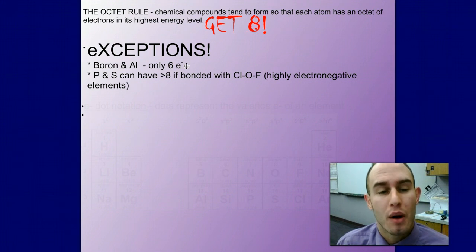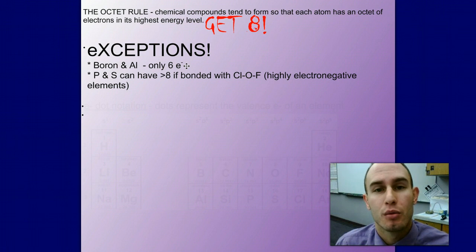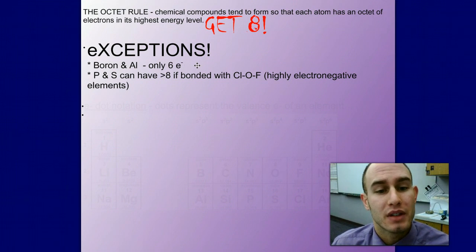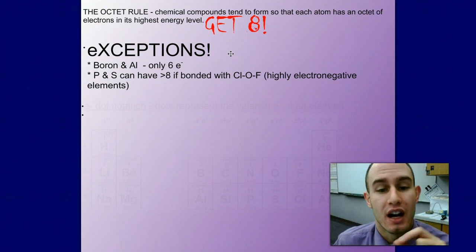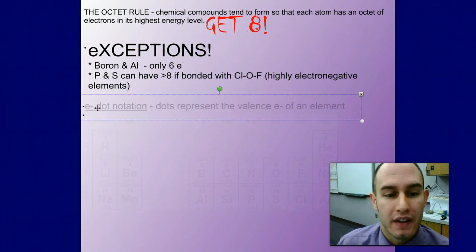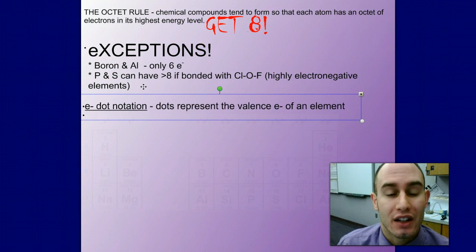Boron and aluminum only really need six electrons around the nucleus. On the periodic table, boron and aluminum are in group 3A or group 13 which has three valence electrons. So sometimes they are going to share their three electrons or transfer them only to have six. Phosphorus and sulfur can have greater than eight if they are bonded to a highly electronegative element such as chlorine, oxygen and fluorine.